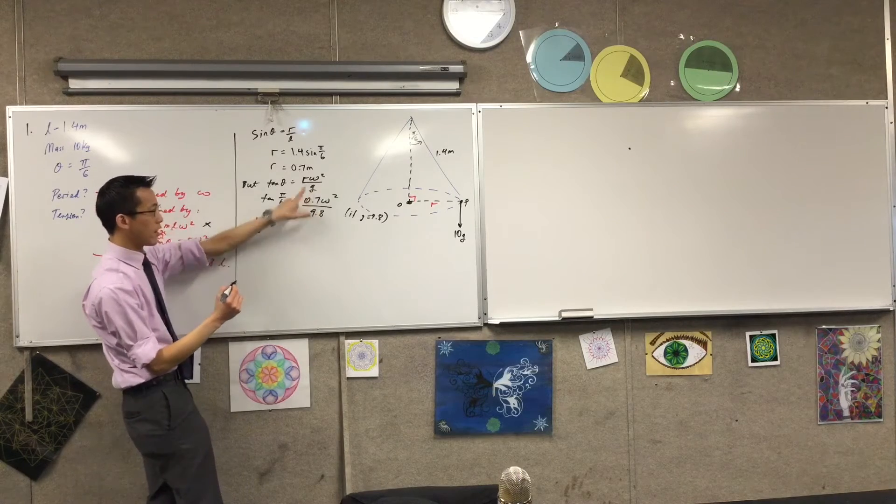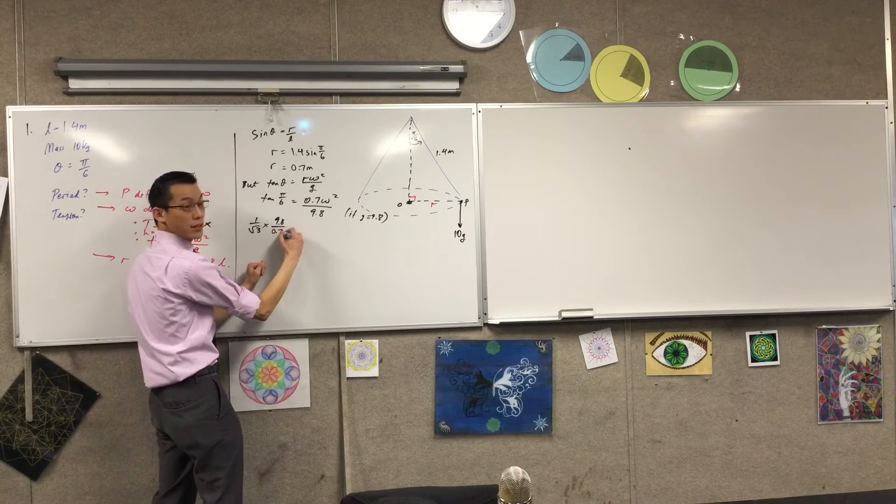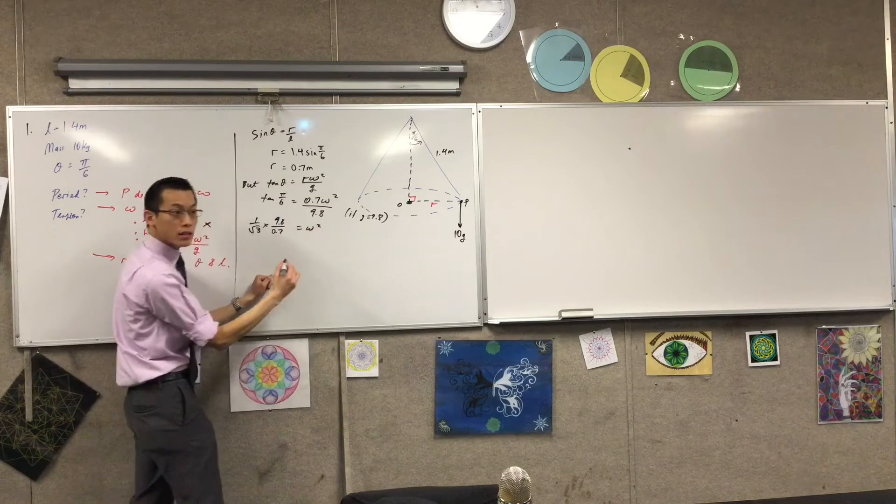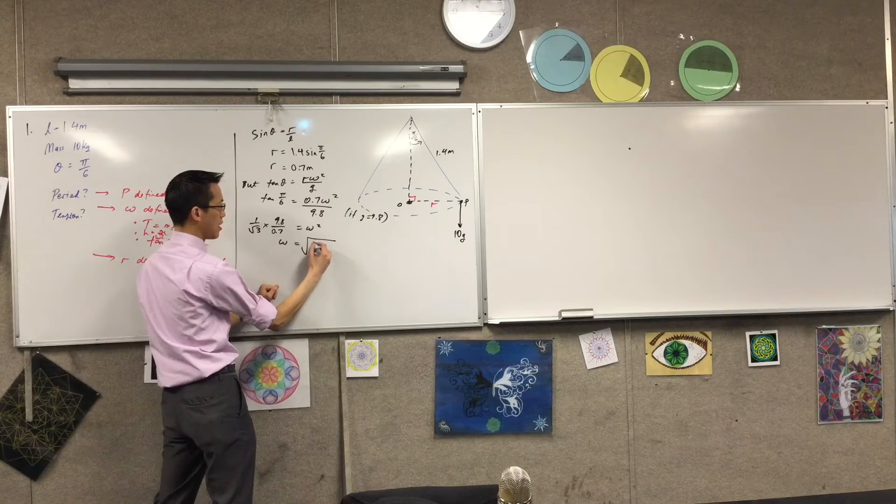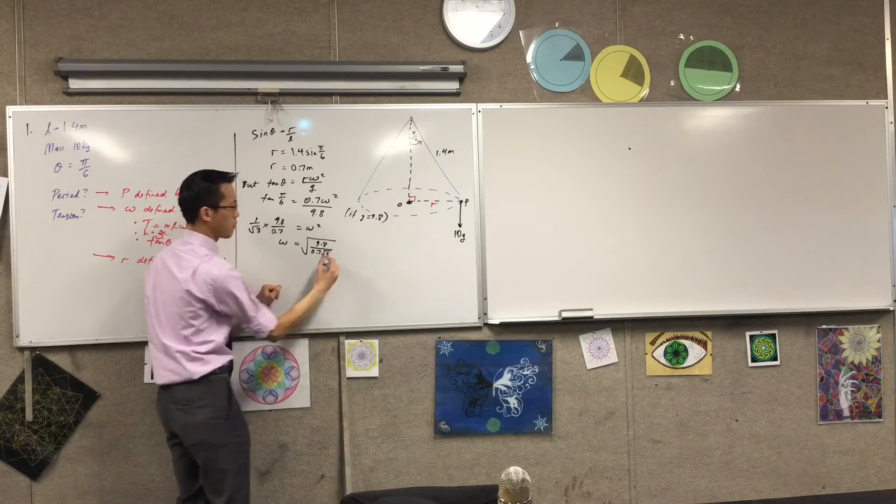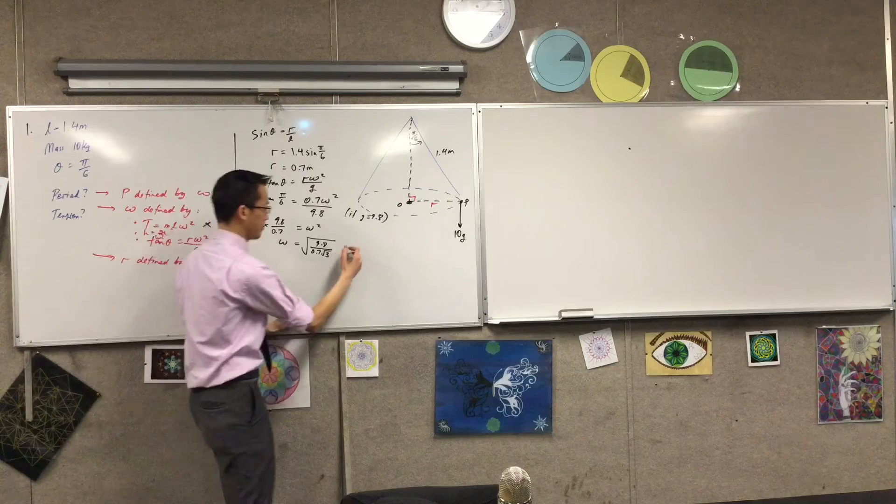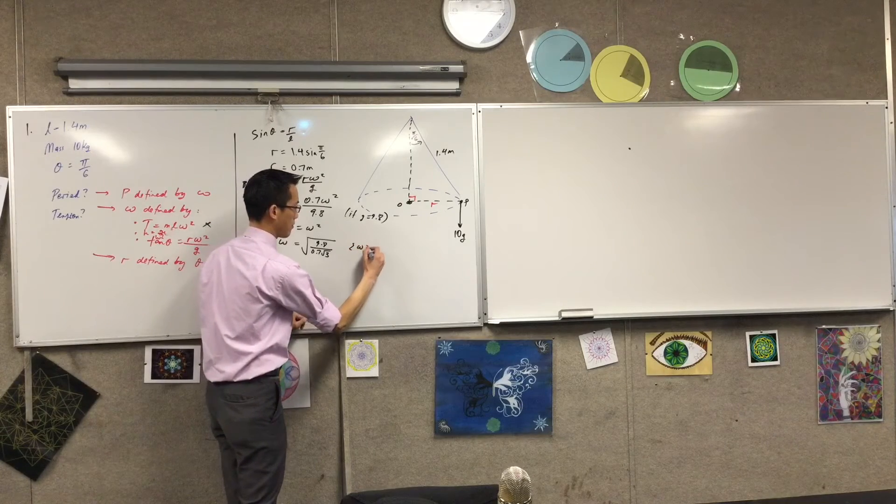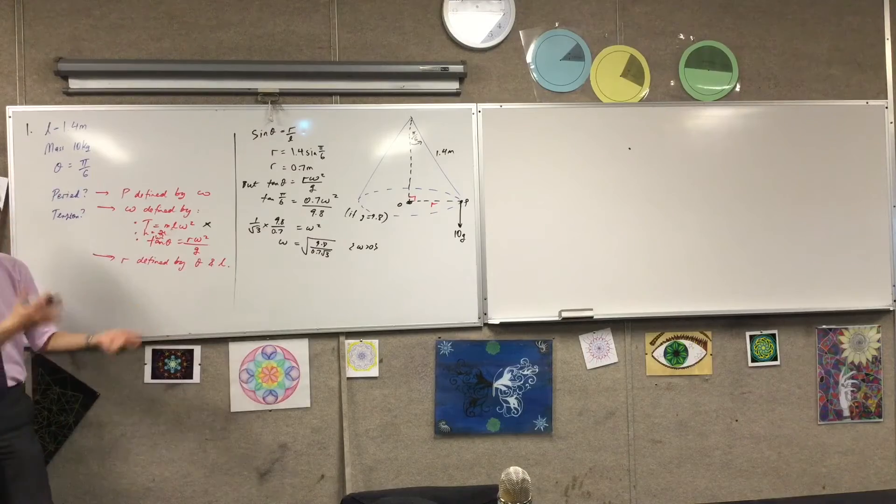I'm going to, at the same time, get all of this stuff over this side. So that's 9.8 on 0.7. This is omega squared. So omega is going to be the square root of 9.8 on 0.7 root 3. Okay? It doesn't matter if it's positive or negative, because either way, you're still going to get angular. That's exactly right. So I'm just going to say, for this value, like for this one, okay?